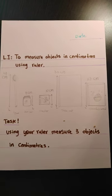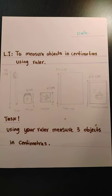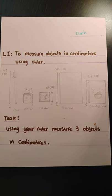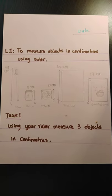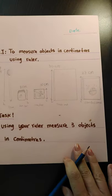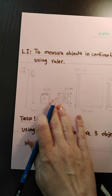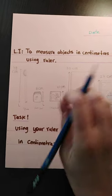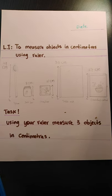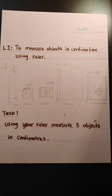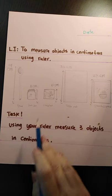Now I have a task for you. Your task is, using your ruler, measure three objects in centimeters. Please pause the video to write your task. After choosing your three objects, please draw them — just a simple drawing — and then measure the length of these objects and write it down in centimeters.